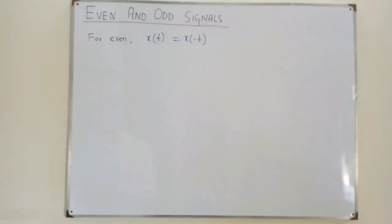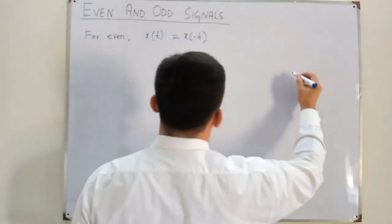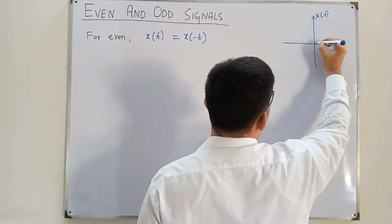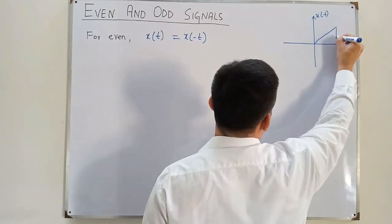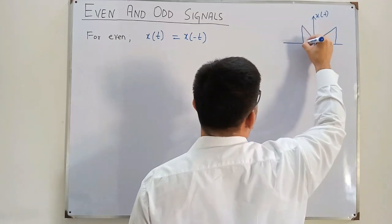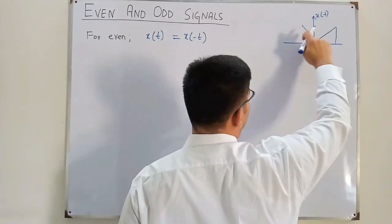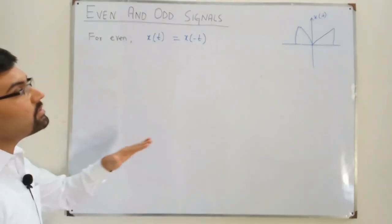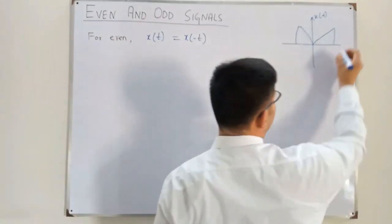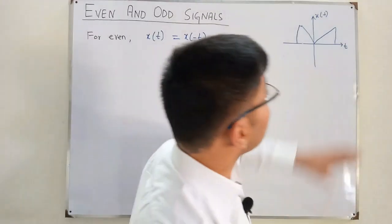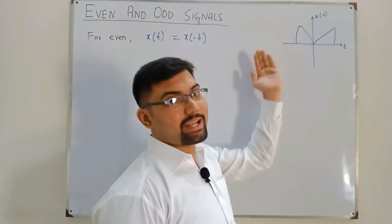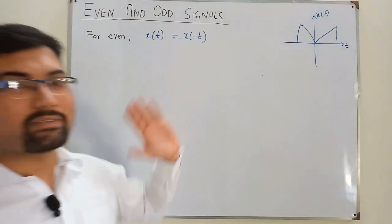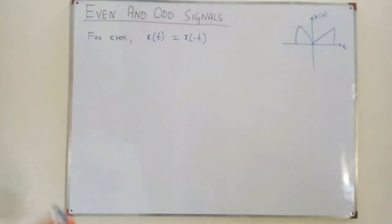For an example, consider a signal x(t) that is symmetric. If this is the positive portion of the time axis and you time reverse it — that is, take the mirror image about the y-axis — it is the same function as x(t). So x(-t) equals x(t), and in this case we have it as an even function.